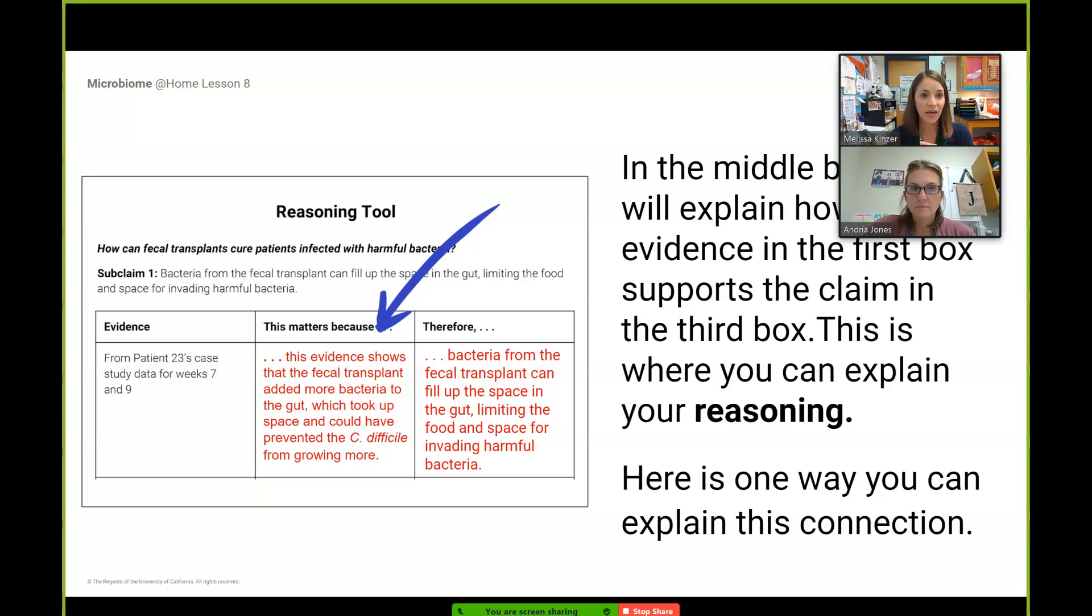I would love for you guys to go ahead and fill in this first example. From patient 23's case study data for week 7 and 9, we can restate the subclaim in that therefore section on the far right hand column. Then we can say that this matters because this evidence shows that fecal transplant added more bacteria to the gut in week 9 - that pie chart was all filled back up again which took up space and could have prevented the C. difficile from growing more. In week 7 the C. diff showed up as that red section of the pie, and then in week 9 that red section was gone and the pie chart was all nice and full again with healthy bacteria. This would be a good place to push pause and fill it in.